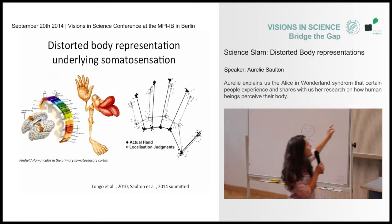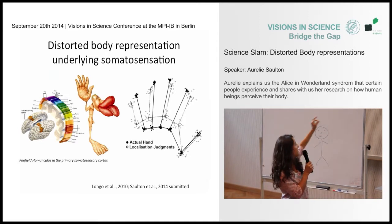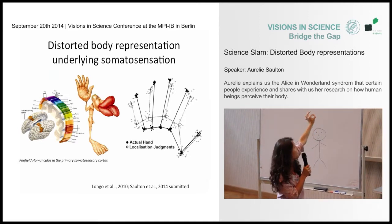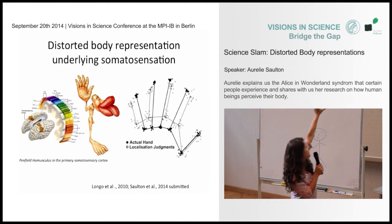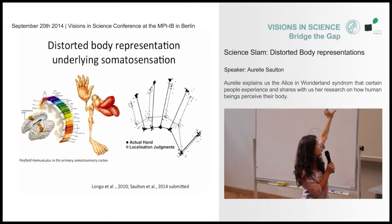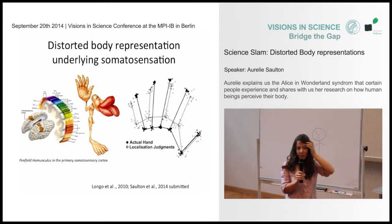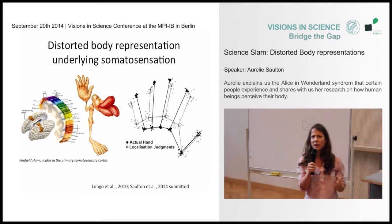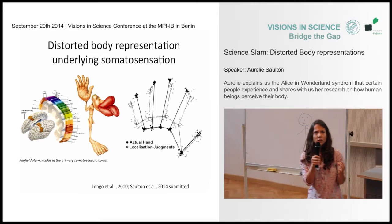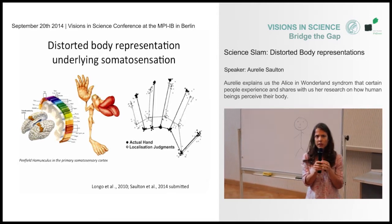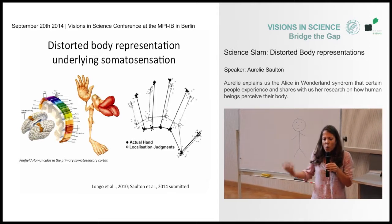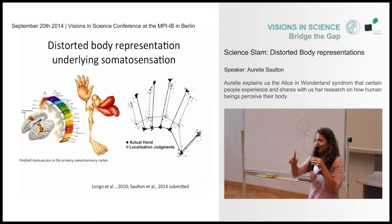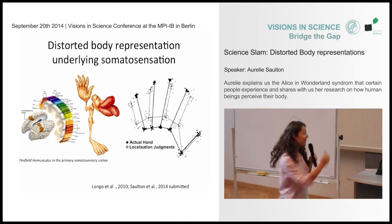That's interesting, because those distortions seem to mirror a very famous anisotropy located in the primary somatosensory cortex in the brain. That's quite puzzling. And it raises the question: if we also have distorted body representations, why are we able to act properly in space?